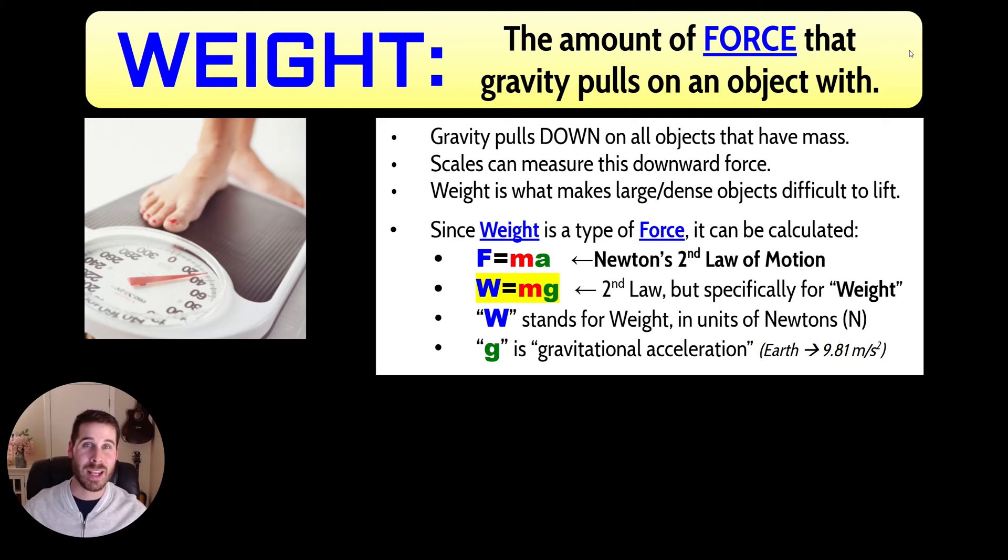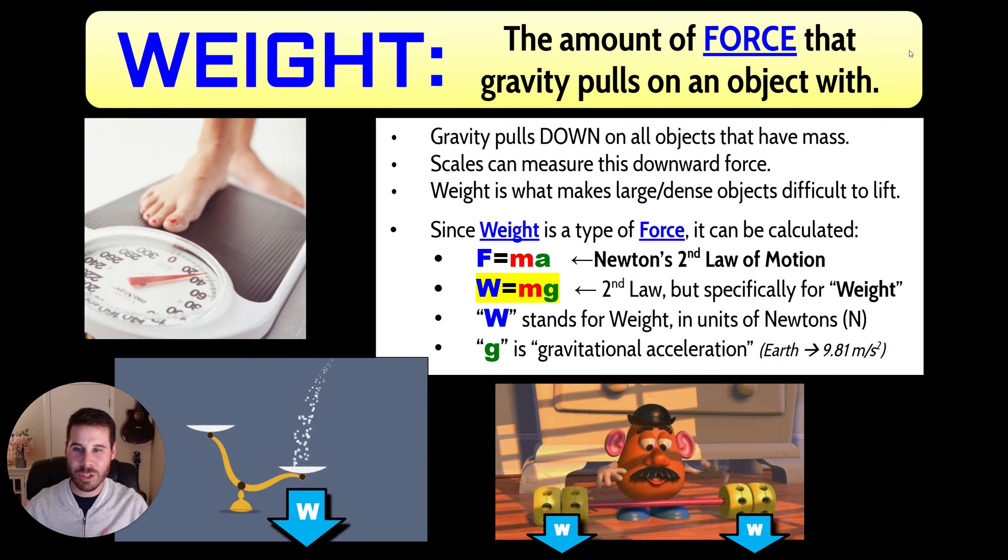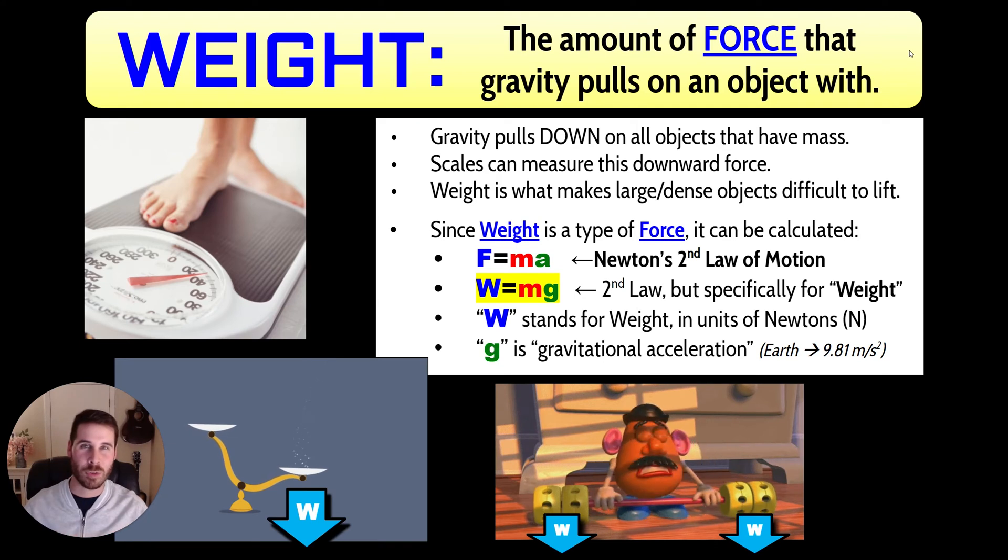Now that number is going to change depending on where you're located. If you go up on a tall mountain, that number would reduce a little bit. And if you go down into a deep valley, that number might rise a little bit. It also can change if you go from planet to planet. More on that later. Here's two animations that explain weight. On the left, you can see there's a scale and some mass of some kind is being dropped onto the right hand side of that scale. And so it tips down.